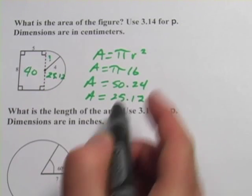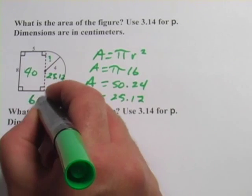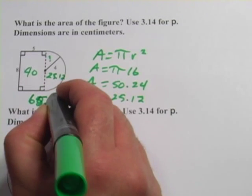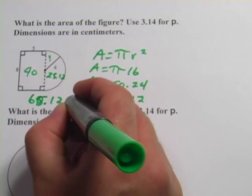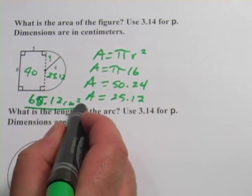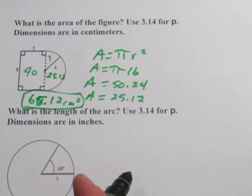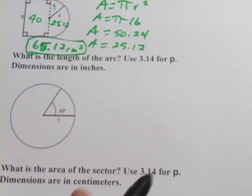And now I add 40 to that, and for the whole figure I get 65.12, and then it says dimensions are in centimeters, and this is area, so it's going to be square centimeters. All right, they're only going to get harder here.